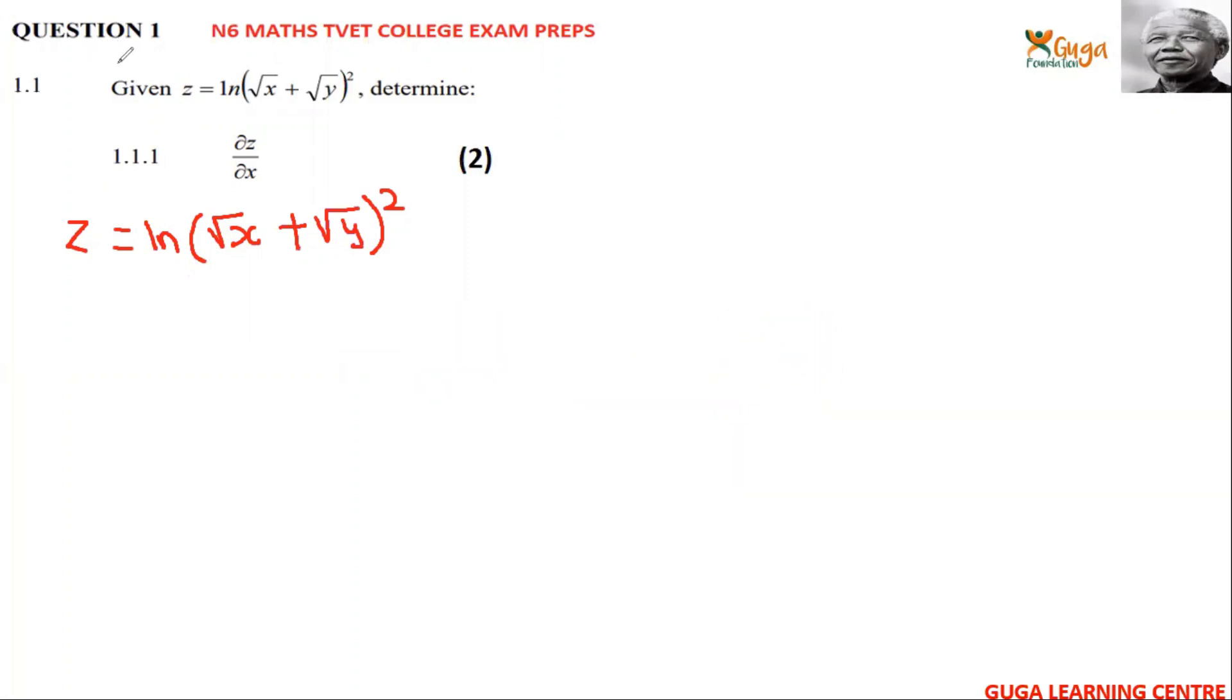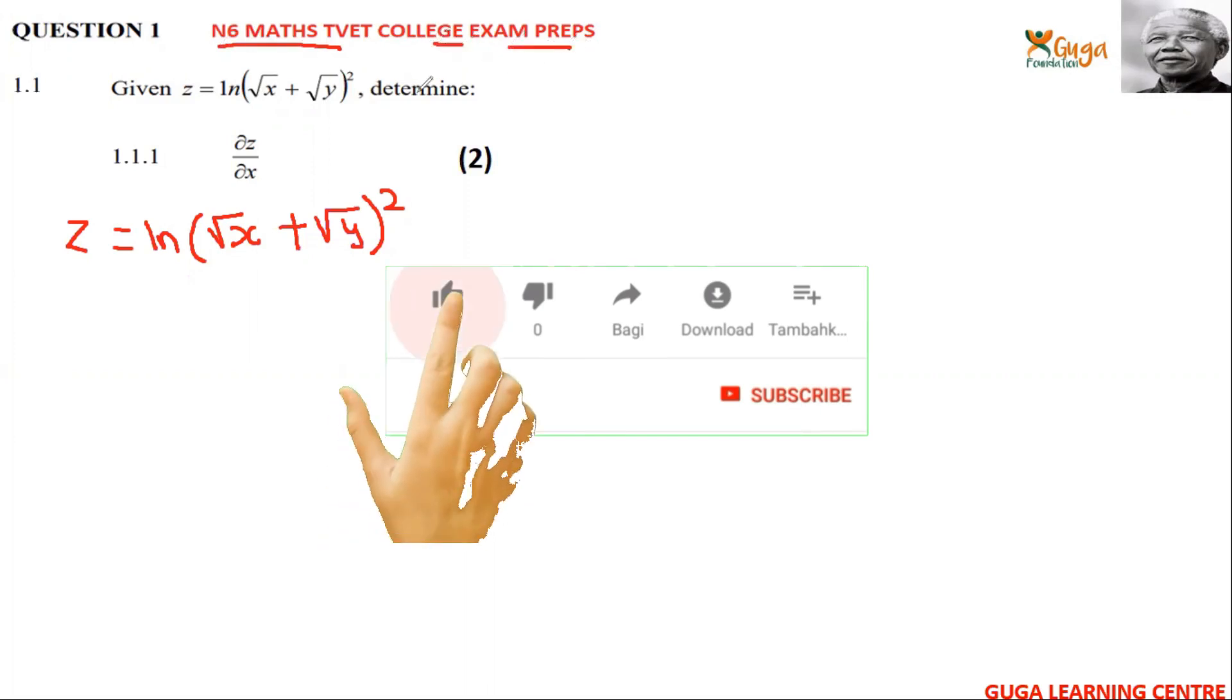Today we'll be doing mathematics NS6 TVET College exam preparations. You are given z = ln(√x + √y)³.